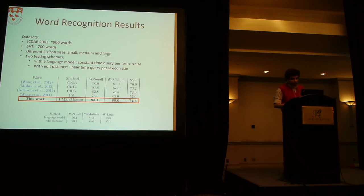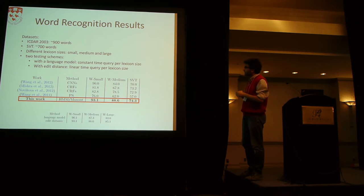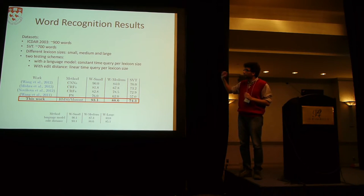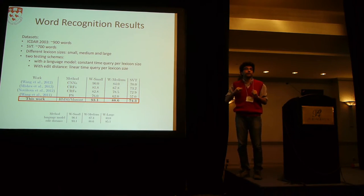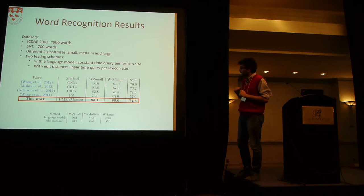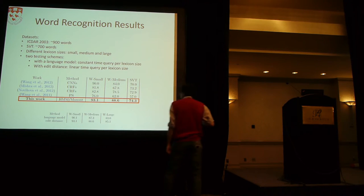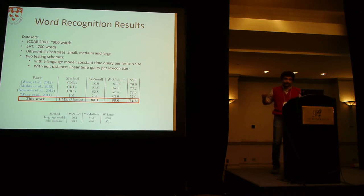We test word recognition on two datasets: IIIT and SVT, with different lexicon sizes — though nobody really uses the large lexicon for pragmatic reasons. We have two testing schemes: one where the language model is used during inference, and another using nearest-neighbor search on edit distance after inference, without any language model. In both cases, we beat the previous state-of-the-art. Edit distance nearest neighbor worked best, but the language model still outperformed prior state-of-the-art. We outperformed on both SVT and IIIT, which the Wang et al. 2012 method does not.